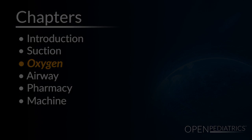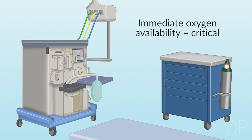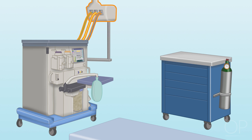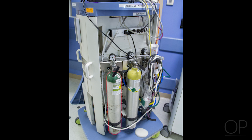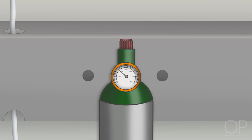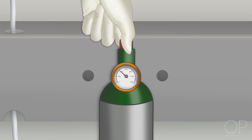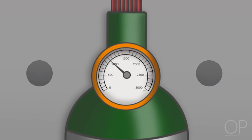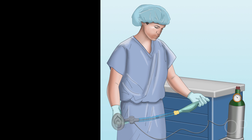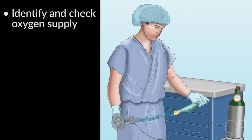Immediate availability of oxygen is critical in preparing for intubation and induction of general anesthesia. Oxygen is supplied to the anesthesia machine by a central source. Functioning of the central source can be assessed by reading the pipeline oxygen pressure display on the anesthesia machine. A backup source of oxygen in this setting is located on the back of the anesthesia machine in an E-cylinder. This should be opened briefly to verify sufficient oxygen pressure in the backup tank. Oxygen E-cylinder pressures should be at least 1,000 psi, indicating the cylinder is at least half full.